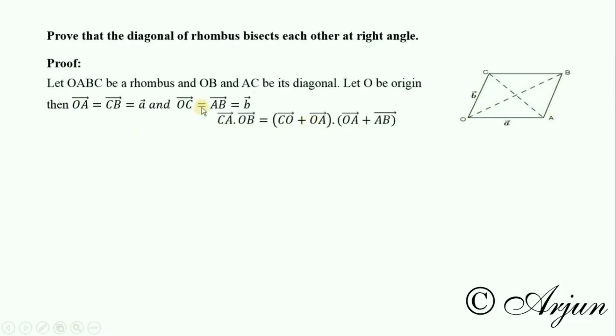Now CA dot OB. If this equals zero, it means 90 degrees—the diagonals are perpendicular. CA equals CO plus OA, and OB equals OA plus AB.